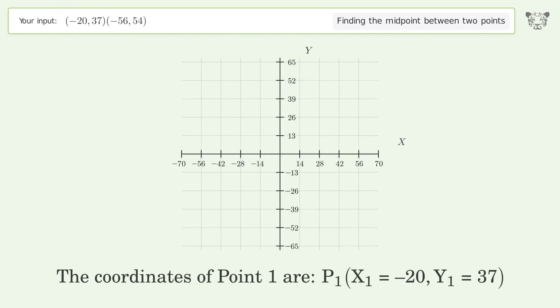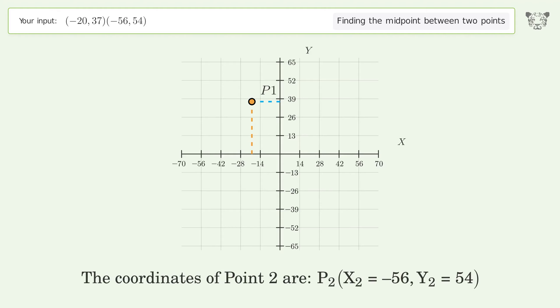The coordinates of Point 1 are x₁ = -20, y₁ = 37. The coordinates of Point 2 are x₂ = -56, y₂ = 54. Pm represents the midpoint of the two points.